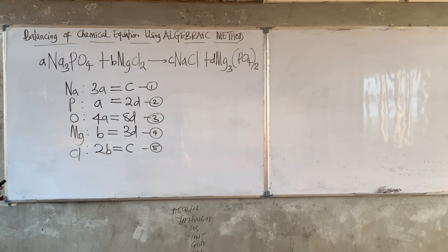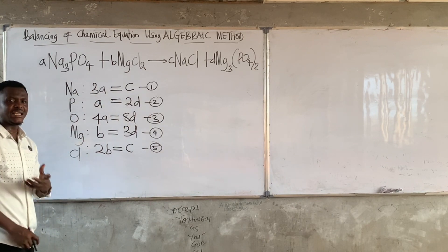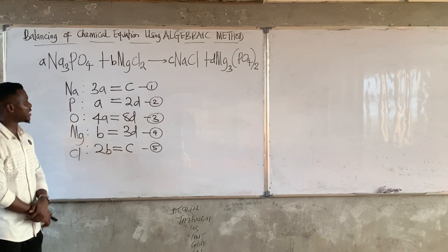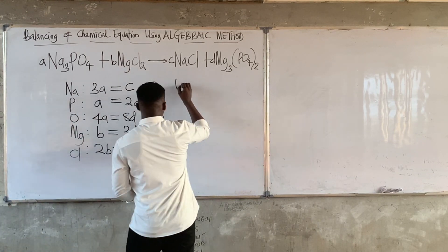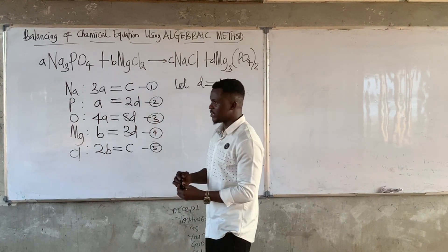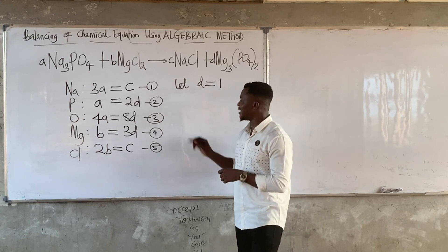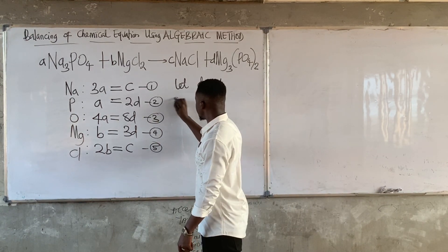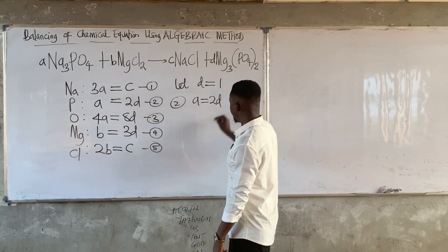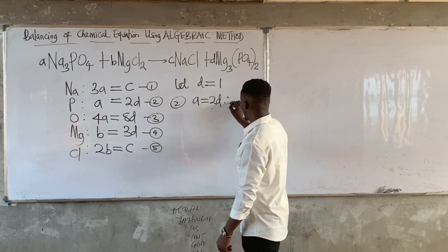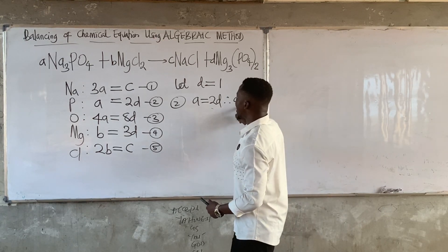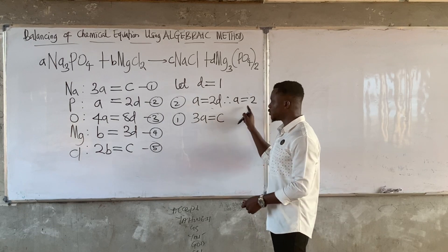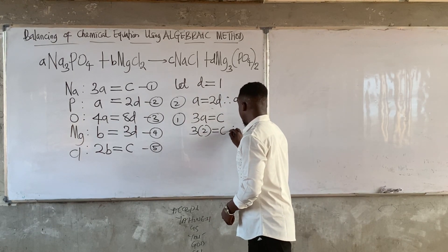The next thing is to assign one coefficient a value of 1. Any coefficient can be assigned this value. I will let D = 1. From equation 2: A = 2D, so A = 2 times 1 = 2. Therefore A = 2. Now with A known, I can get C from equation 1: 3A = C, so 3 times 2 = 6. Therefore C = 6.